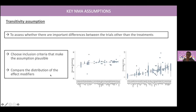Authors could also, if data are available, compare the distribution of the effect modifier. This example shows the mean age of participants for the Cochrane network meta-analysis for psoriasis — the mean age for each comparison. You can see that the distribution of the mean age of participants is similar within trials.